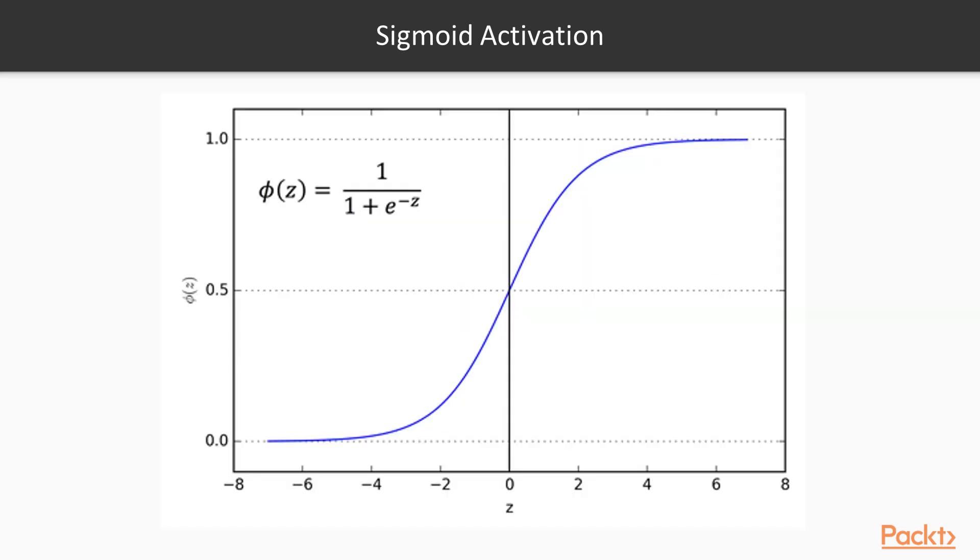In sigmoid activation, we just have one neuron in the last layer. That one neuron will give 1 or 0 output. In order to do that, we have this function, which has 1 upon 1 plus e raised to power minus z. Here z is the activation or the output of the last neuron.